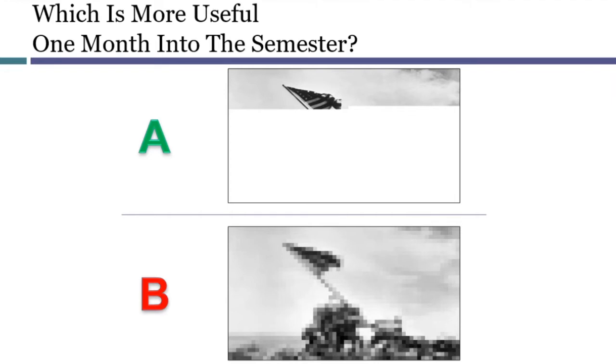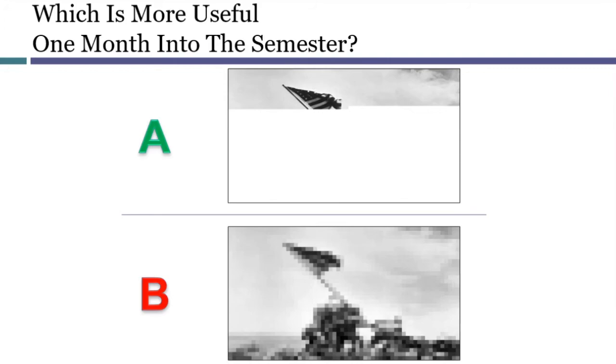Now let's transfer these ideas to the structure of a constitutional law course. Imagine that you are one month into the course — which of these two images will help you learn the material better going forward? Research into the psychology of learning shows that image B will be much more helpful. Having a sense of the big picture gives you a structure that you can add new information to, whereas image A shows one part of the picture in detail but provides no structure for fitting new information. So the idea of the book's structure is to give you a big picture at the outset, saving the details of particular doctrines for later.